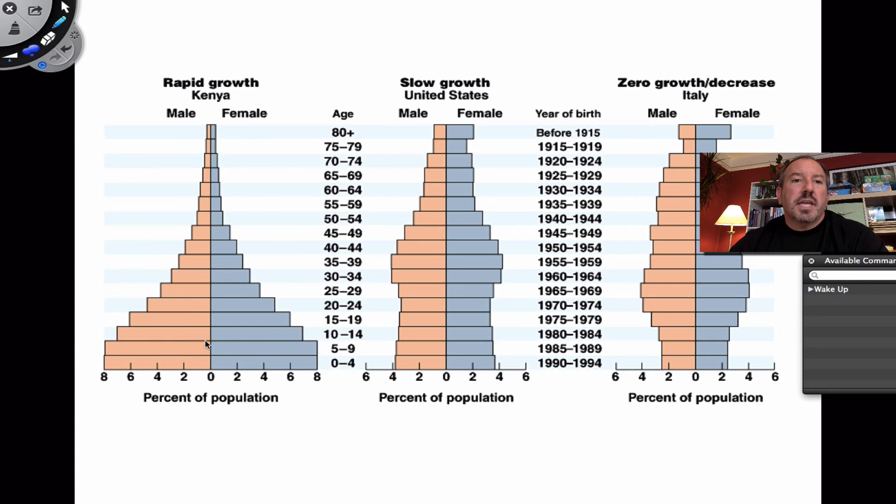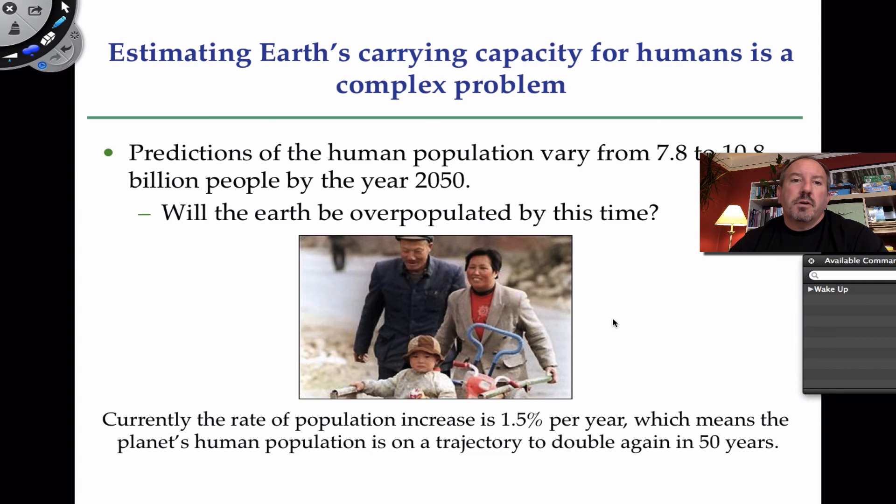Now, if you look at Kenya, it's rapid growth because of the R value. The United States is like slow growth. And then over here, Italy, it looks like when all things considered, it might not even be growing at all. Birth rate and death rate might be the same. And so how far can we go with this exponential growth? When will the human population reach the carrying capacity? This is a question.